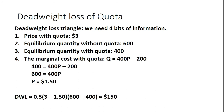So now we have all the dimensions to calculate the deadweight loss triangle. The area of a triangle is one-half base times height. The height of the triangle is $3 minus $1.50, and the base of the triangle is 600 minus 400, and this gives us a deadweight loss of $150. I hope you found this video helpful. Thank you.